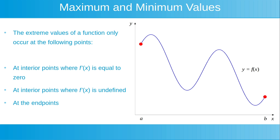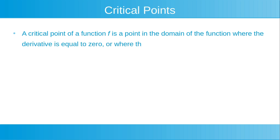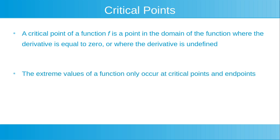We can simplify this further by introducing critical points. A critical point of a function f is a point in the domain of the function where the derivative is equal to 0, or where the derivative is undefined. Using this definition, we can say that the extreme values of a function only occur at critical points and end points.